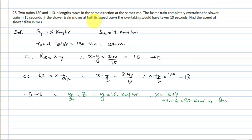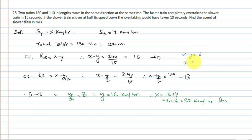Case 1: relative speed = x − y, time = 15s, so x − y = 240/15 = 16. Case 2: slower train at half speed y/2, relative speed = x − y/2, time = 10s, so x − y/2 = 240/10 = 24. Now we have two equations: x − y = 16 and x − y/2 = 24.